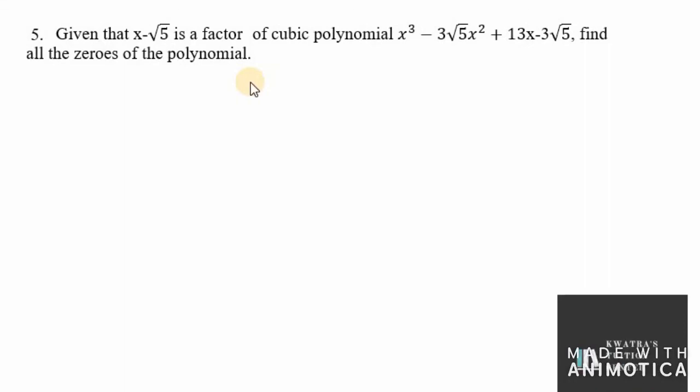Hello everyone, let's start with question number 5 of exercise 2.4. In this problem, it is given that x minus √5 is a factor of a cubic polynomial. Find all the zeros of the polynomial.